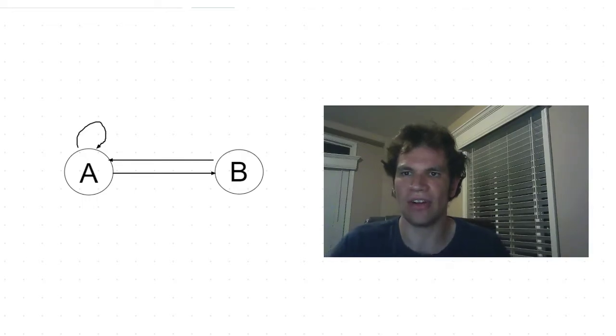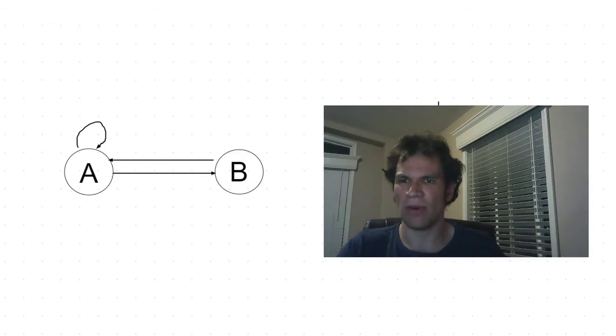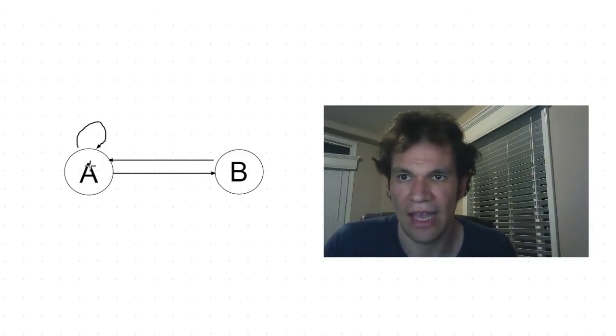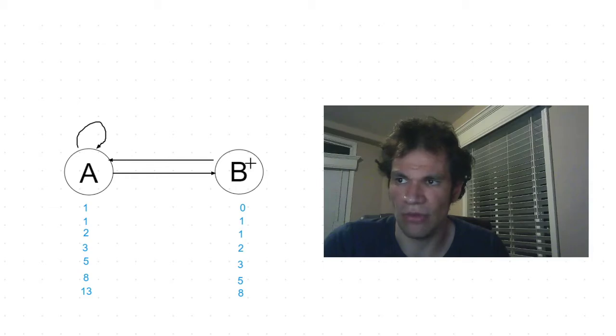For finding a good algorithm, we will reformulate this problem in a different way. First, consider this graph over here. Suppose that we start on the node A, and now in the same style we did with Bellman Ford in the previous video. Let's count the number of paths to reach each node with 0 steps, 1 steps, 2 steps, and so on. Then there is only one path to reach the node A, and there are no paths to reach the node B, because A is the starting node.